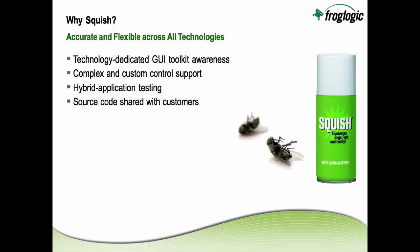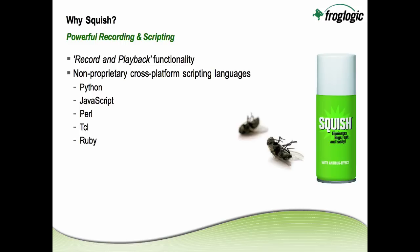Now why Squish over other tools out there? Squish has dedicated knowledge of each of the GUI toolkits that it supports. Its intricate knowledge helps you work with not only controls across the different technologies that Squish supports, but also your more complex or custom controls. Hybrid application testing allows us to work with multiple GUI toolkits together from a single solution. And not to mention that we also share our source code with customers. Squish provides powerful record and playback functionality as well as scripting. Our scripting languages are non-proprietary and cross-platform, meaning your tests will work across the different platforms on which the technology you're testing is supported. These scripting languages are real-world languages — we're not trying to limit you but expand what you can do with your testing framework.